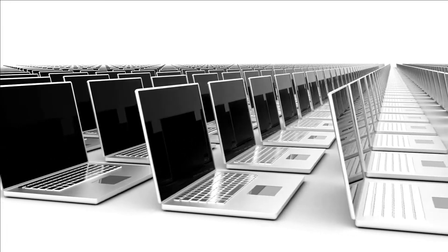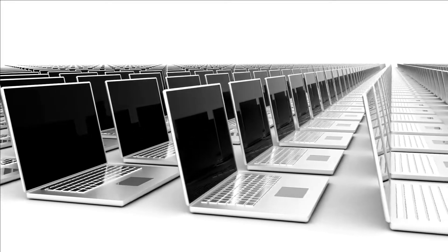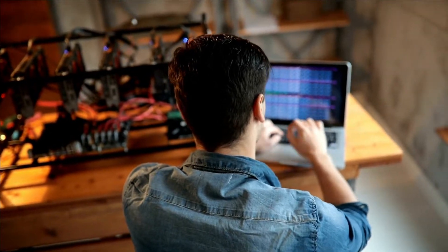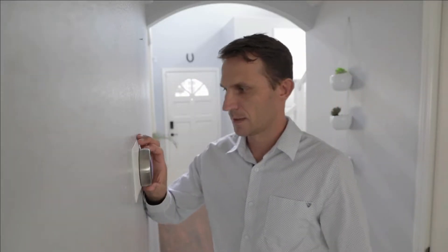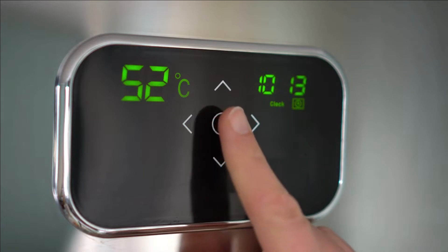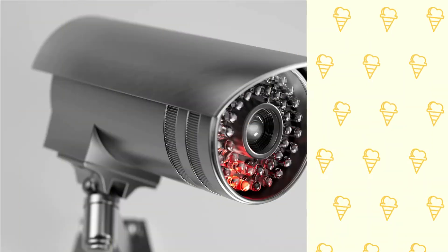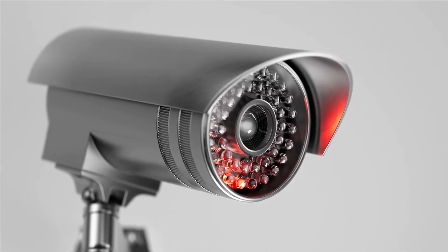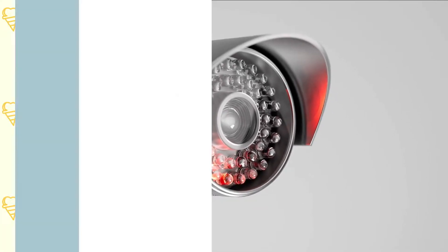This kind of architecture also helps reduce resource strain, since we are processing data locally and only sending information that is worth anything remotely. For example, a smart thermostat will only send information when the temperature has changed from what was already set. Similarly, a security camera will only send information when there is movement detected in front of it.